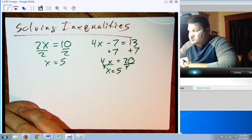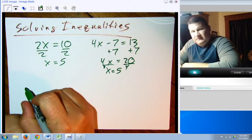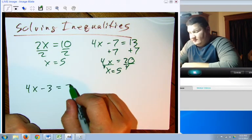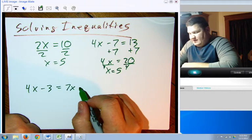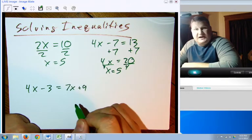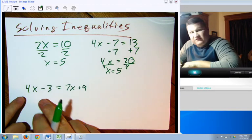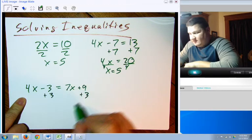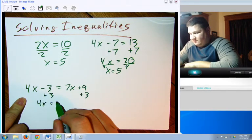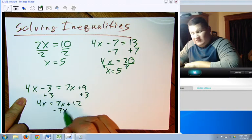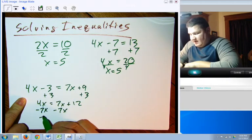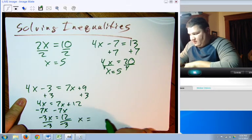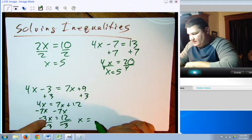Okay, so again, not too shabby. Even if I have something like this, 4x minus 3 is equal to 7x plus 9. In this case, I have variables on both sides, I have numbers on both sides, but I can sort that out. Add 3 to both sides, and that's going to get 4x equals 7x plus 12. I'm going to subtract 7x from both sides, and I'm going to get negative 3x equals 12. I'm going to divide both sides by negative 3. x equals negative 4.